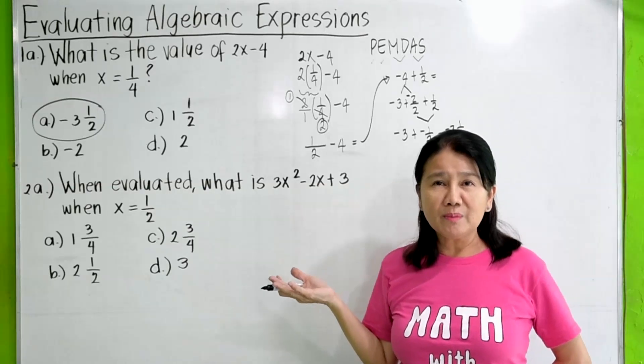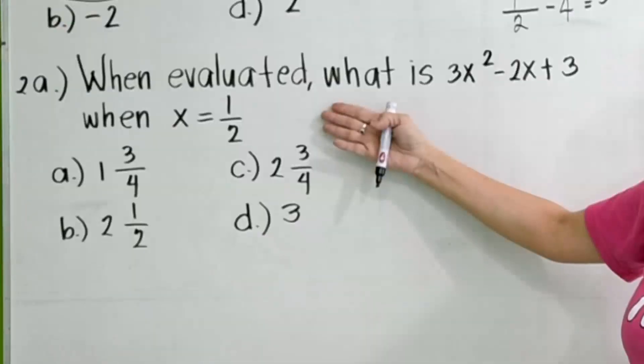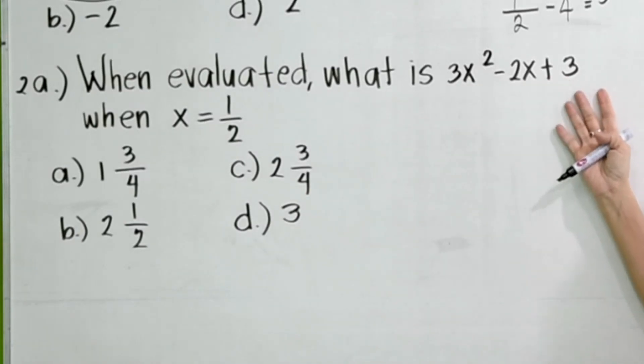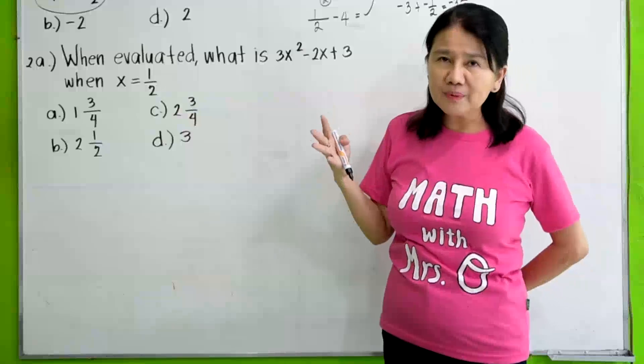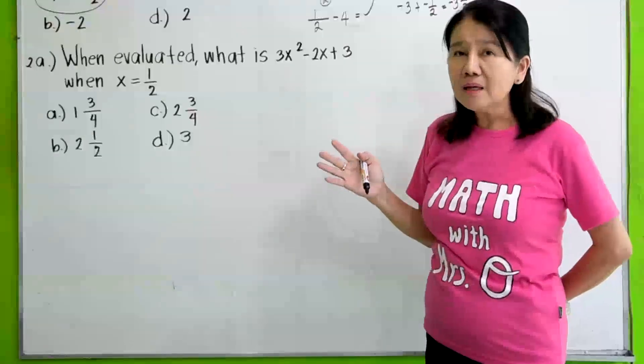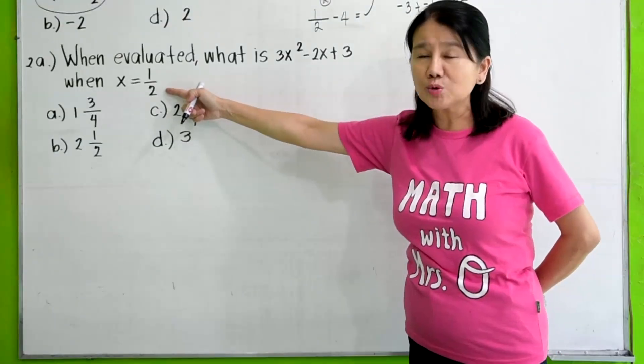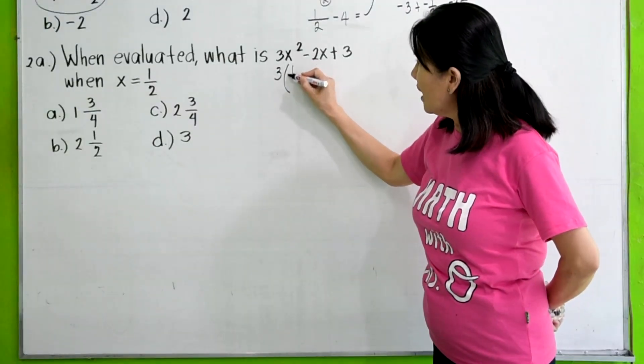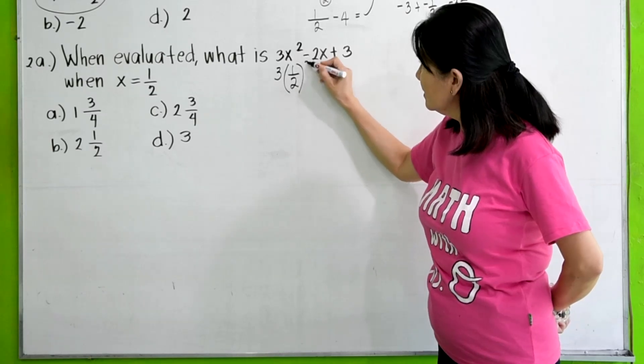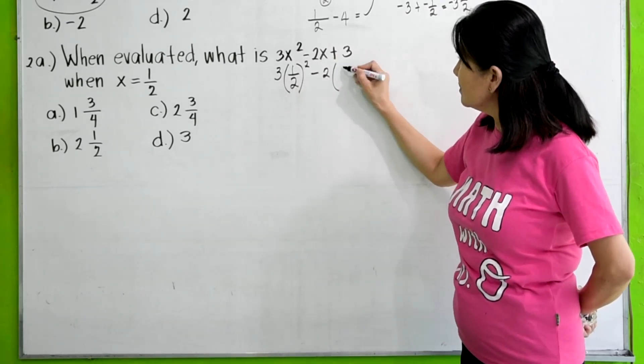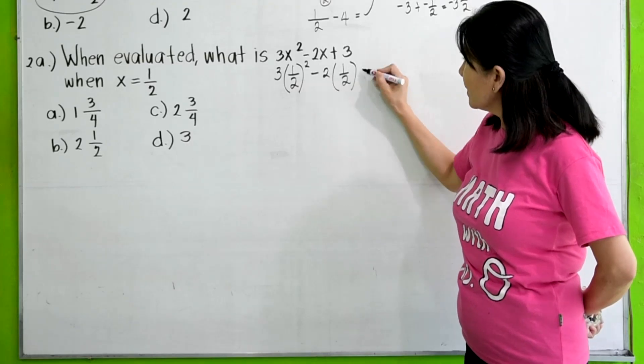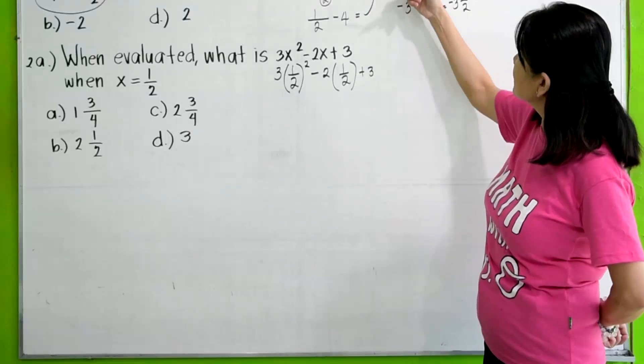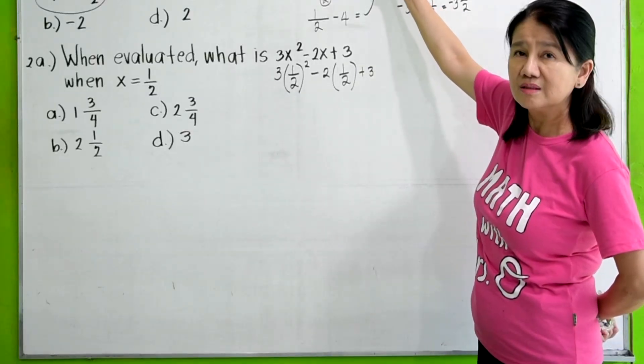Now, let's proceed to problem number 2. When evaluated, what is 3x squared minus 2x plus 3 when x is equal to 1/2? Same thing happens here. Apply PEMDAS. Substitute the value of x equals 1/2. So we have here 3 times 1/2 squared minus 2 times 1/2 plus 3.